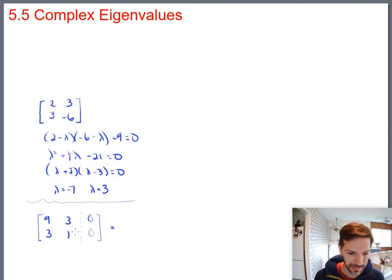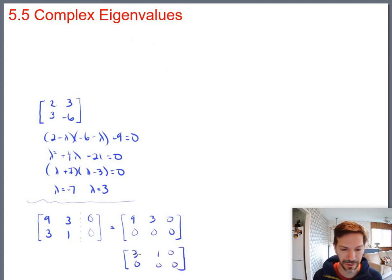When you row reduce you can do something like negative 1 third of the top row added to the bottom row. So you get 9, 3, 0, 0, 0, 0, 0. And if you want to keep row reducing I guess you could go 3, 1, 0, 0, 0, 0. Or if you're really row reducing you could go 1, 1 third, 0.